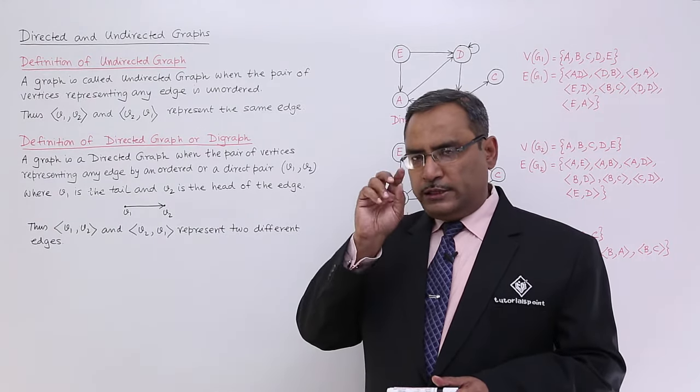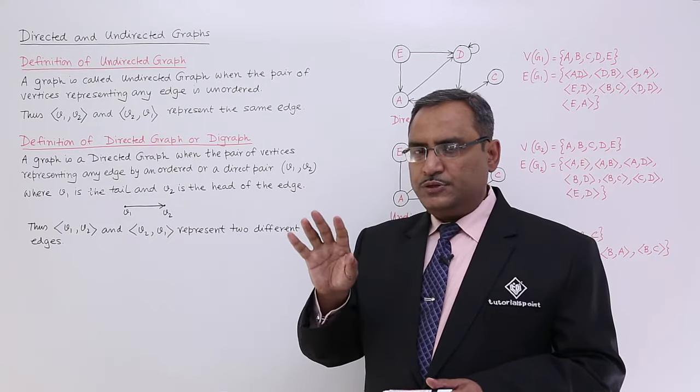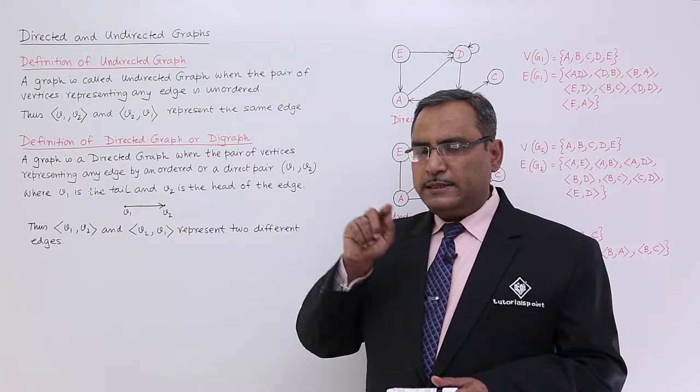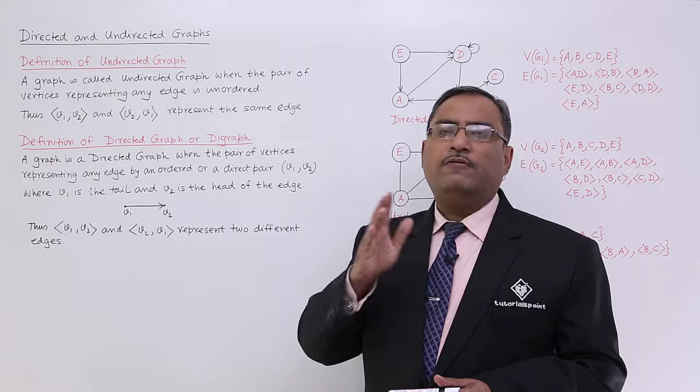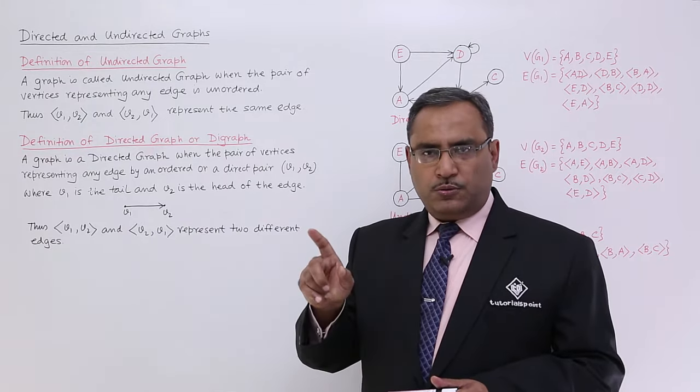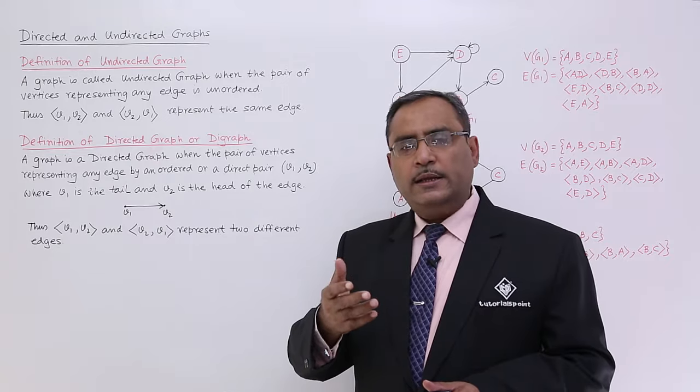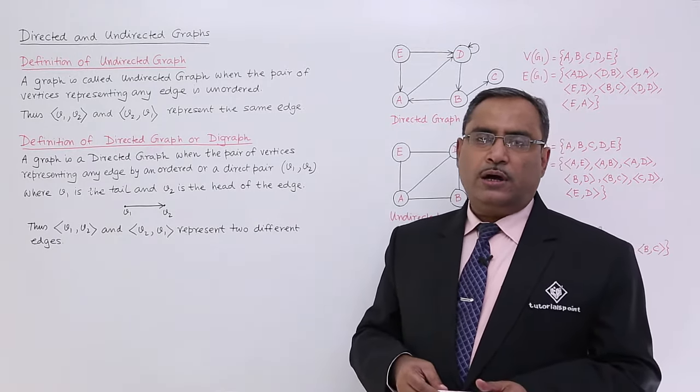There will be no arrow. There is no conception of any tail and head. So V1 and V2 have been connected by a single edge. I cannot tell that V1 is the tail or V2 is the head or vice versa. So V1 V2 and V2 V1 will produce and represent the same edge of the graph and that is why the graph is called undirected.